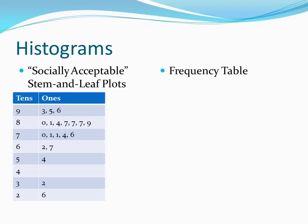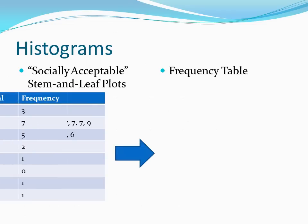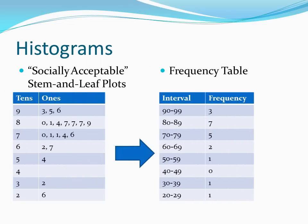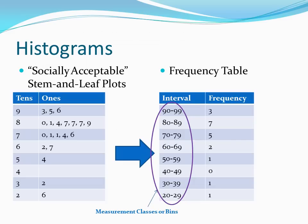From this stem and leaf plot, our first step in creating a histogram is to create a frequency table. Now you'll notice on the left side we have intervals, and those intervals — which are also sometimes called measurement classes or bins — tell us what data points are being counted where. The frequency then tells us how many data points are in each interval. For instance, in the interval from 90 to 99, we had test scores of 93, 95, and 96, so our frequency for that interval is 3.